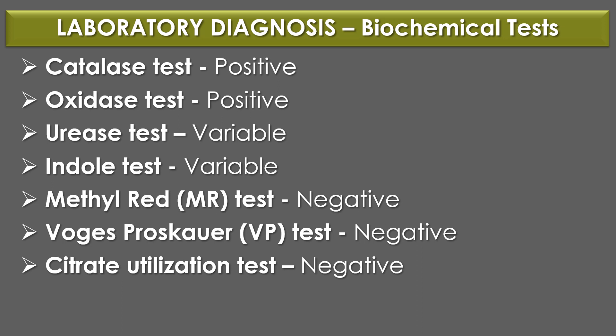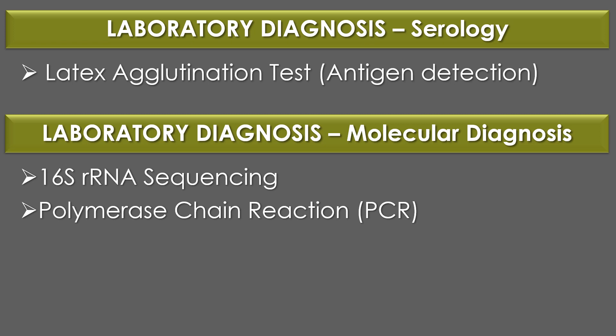Biochemical tests for Haemophilus influenzae: Catalase test — positive; Oxidase test — positive; Urease test — variable; Indole test — variable; Methyl red (MR) test — negative; VP (Voges-Proskauer) test — negative; Citrate utilization test — negative. Latex agglutination test is the serological test used for detection of antigens. Molecular diagnostic methods used for diagnosis are 16S rRNA sequencing and polymerase chain reaction (PCR).